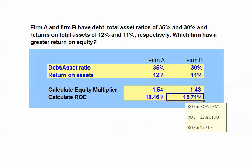For Firm B, we'll take the 11% return on assets and multiply it by its 1.43 equity multiplier, and we get a return on equity of 15.71%.